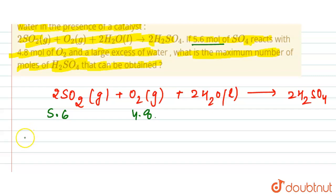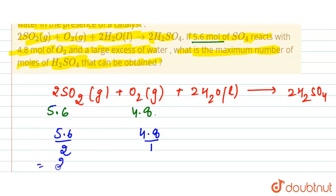So here if we take the ratio of the moles given and the stoichiometric coefficient, that will be 5.6 upon 2, here it will be 4.8 upon 1. So here it is 2.8, here it is 4.8.